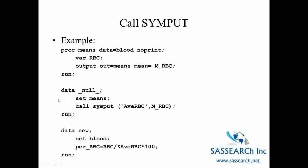Then we are going to create a new data set called data_null_. This data_null_ is a way of creating a data set that is just used for processing observations — it is not used for creating a temporary SAS data set. So we are just processing this one observation from the data set means. Here we have data_null_, bringing in the data set means which has one observation and one variable, and then using the statement Call Simput to assign the value of M_RBC to a macro variable called avRBC.